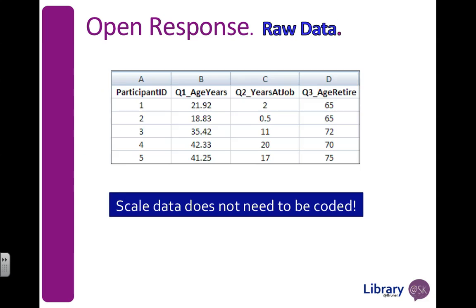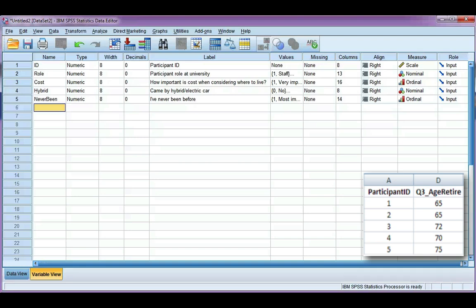Let's look at how we might lay out our data for the first three question examples: what's your age in years, how many years have you been at your job, and what age do you plan to retire? I'm going to use the third variable — what age do you plan to retire — and I'm just going to call it "retire".